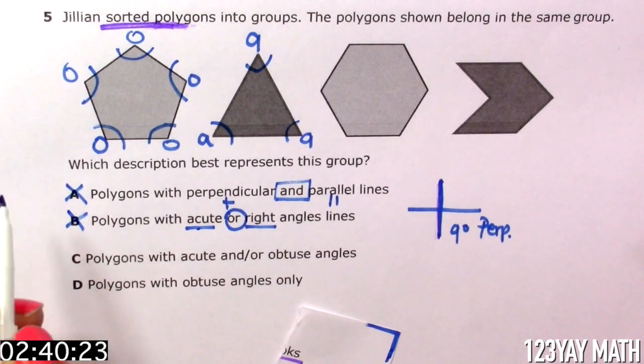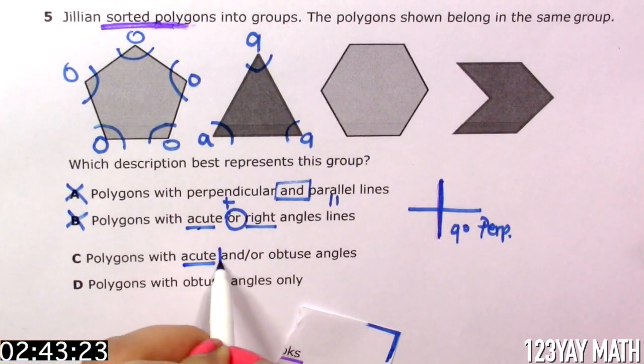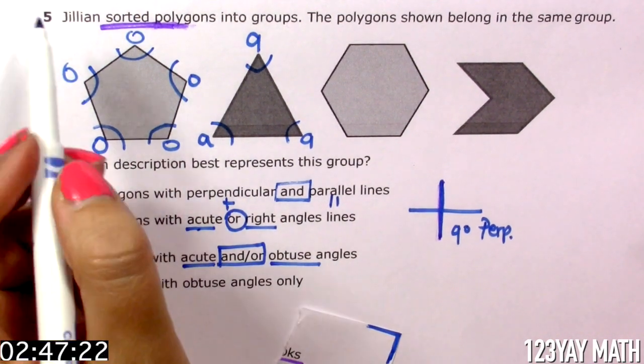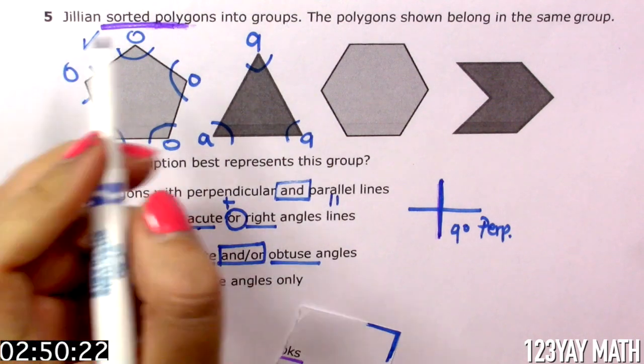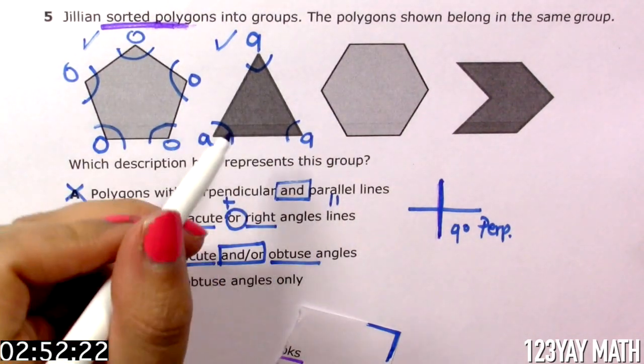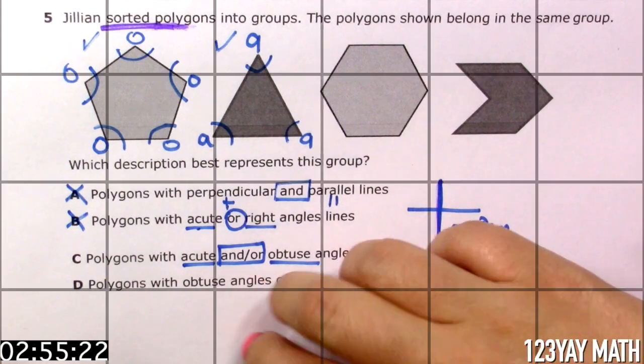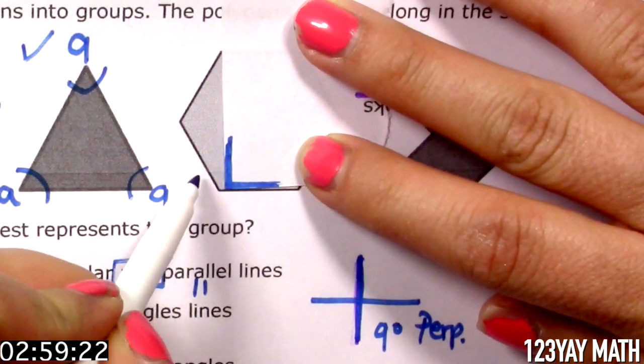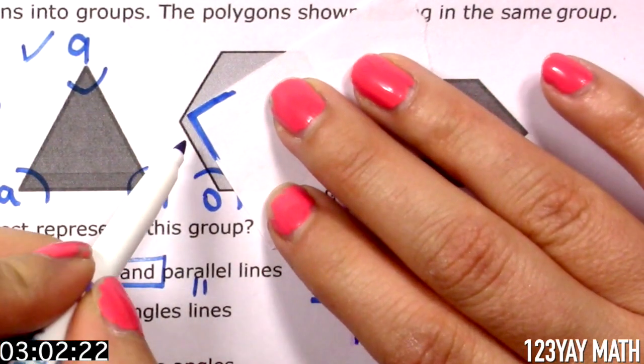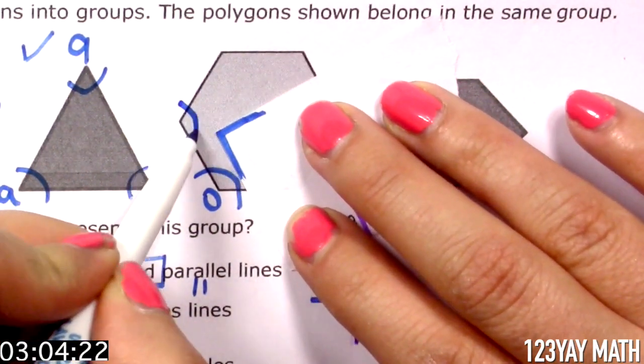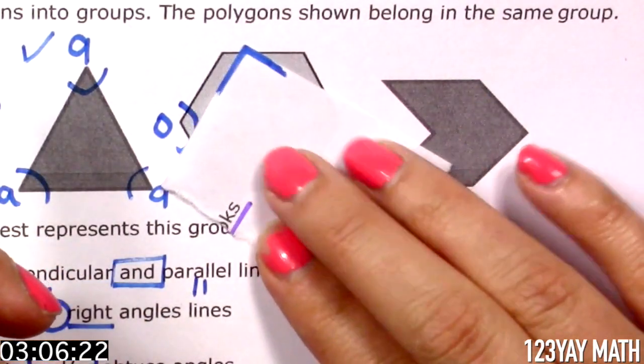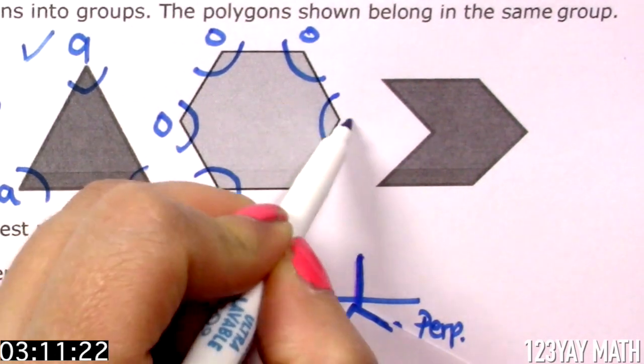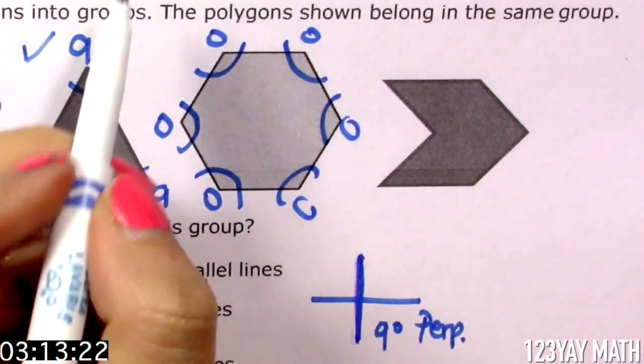Let's check C. Polygons with acute and/or obtuse angles. So this has obtuse. This could be it. This has acute. So far so good. Let's check this shape. Vertex with vertex and line with line. This is obtuse. Vertex with vertex. Line with line. Obtuse. Obtuse. And just by looking at it, I know that all of these are obtuse. So far so good.